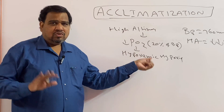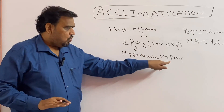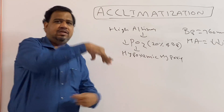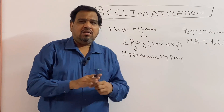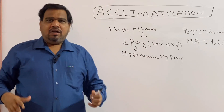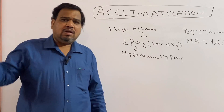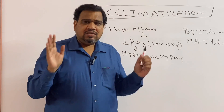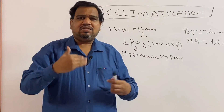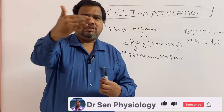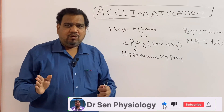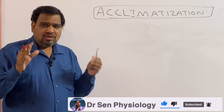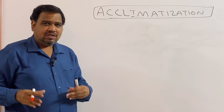Why hypoxemic hypoxia? Because the partial pressure of oxygen itself is decreased. Now, acclimatization is the term used to compensate this hypoxia. What my body does to compensate this hypoxia — my body undergoes certain changes to overcome this hypoxia — that is called acclimatization. We are going to discuss in detail what changes take place.